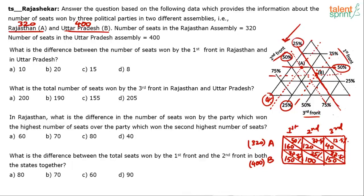Now you know all the numbers. Remember that 12.5% = 1/8 and 37.5% = 3/8 to quickly answer these questions. Question: What is the difference between the number of seats won by the First Front in Rajasthan and Uttar Pradesh? First Front in Rajasthan = 160, in Uttar Pradesh = 150. Difference = 10. Option A is the answer.